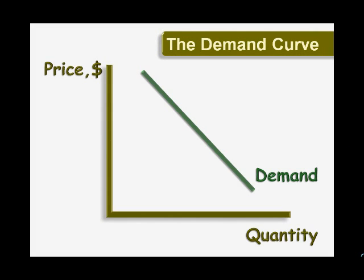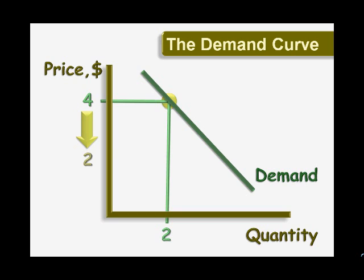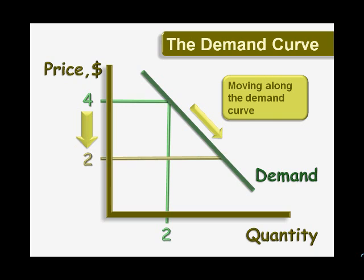The demand curve relates prices to quantity demanded. According to this curve, if the price is $4, then consumers in this market will demand 2 units total. If the price falls to $2, it becomes more attractive to us. So we move along the demand curve, increasing the quantity demanded to 4.